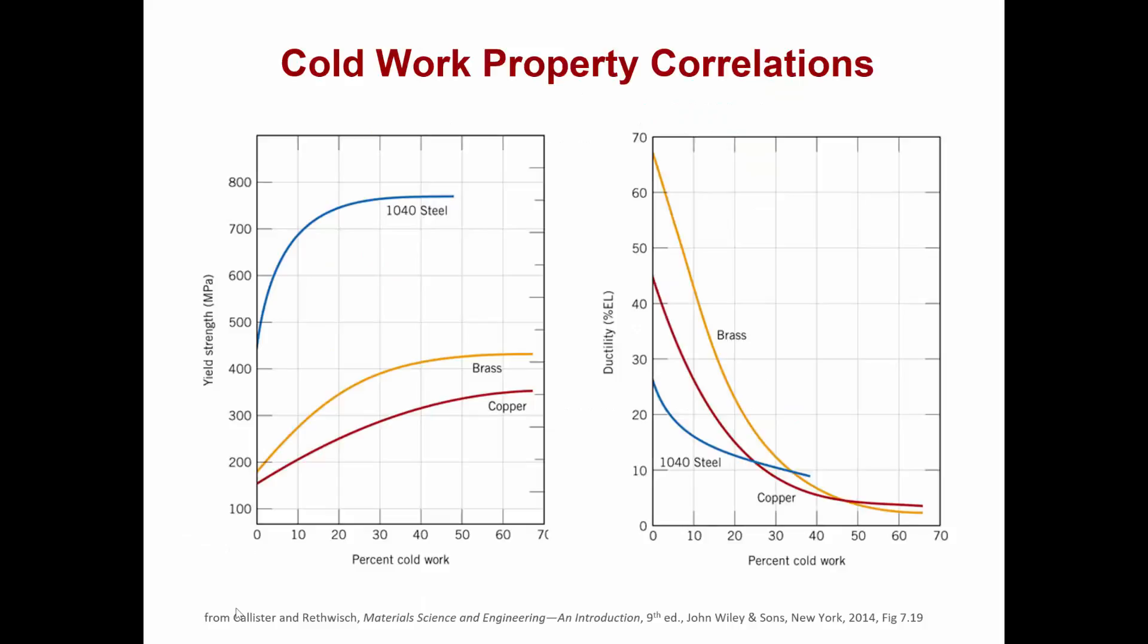As an example, we see here these graphs from the Callister text that show how the yield strength and ductility varies as a function of percent cold work for several different types of metallic samples: steel, brass, and copper.